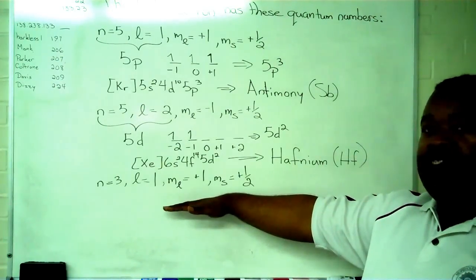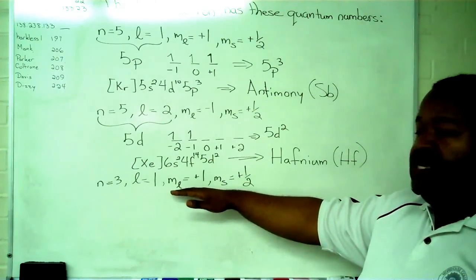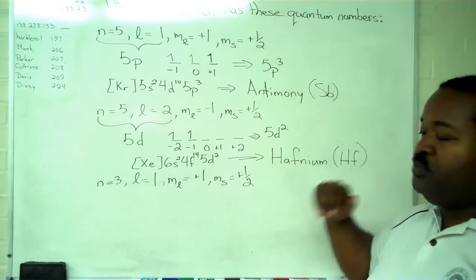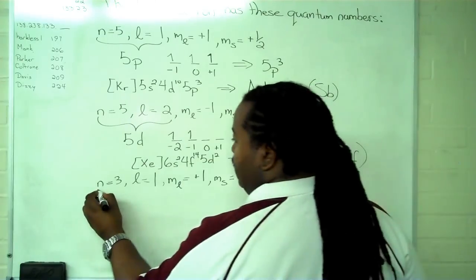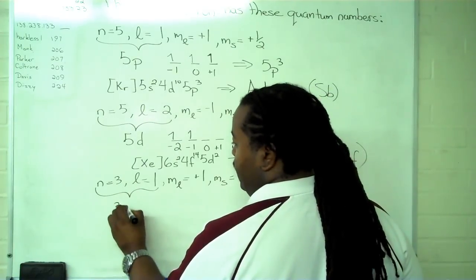So for our final one, principal quantum number is 3, secondary is 1, the magnetic is plus 1, and the spin is plus 1 half. So our last orbital, based on these two, is a 3p.